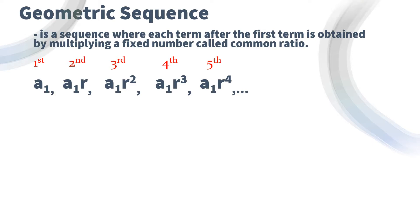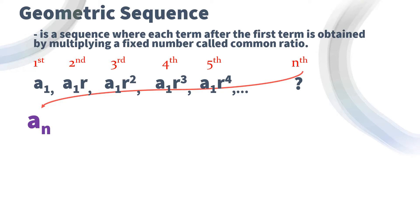So if we want to find the general rule of geometric sequence, what we need to get is the nth term of this general geometric sequence. We can always denote the nth term as a sub n, and we know that a sub n is equal to a sub 1 multiplied by r raised to some exponent. What will be our exponent for the nth term?